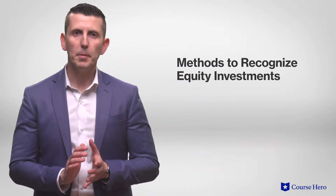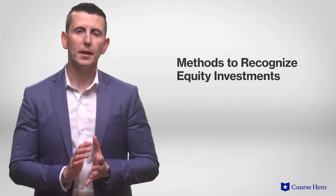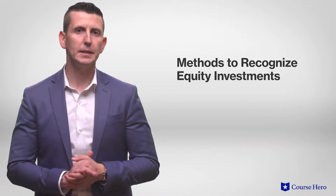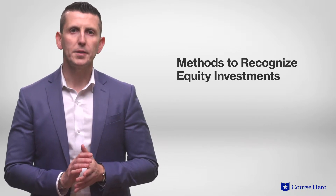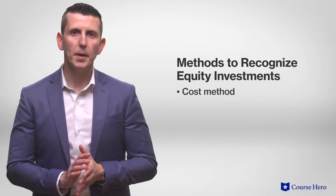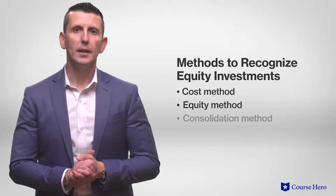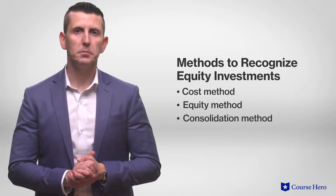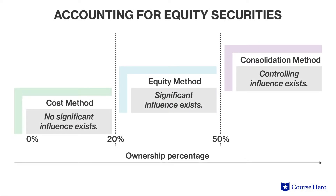There are three methods to recognize equity investments in another entity: the cost method, the equity method, and the consolidation method. In accordance with GAAP, the differences between these three methods are based on the percentage of influence or control that an entity exercises over another entity by virtue of its ownership interest.